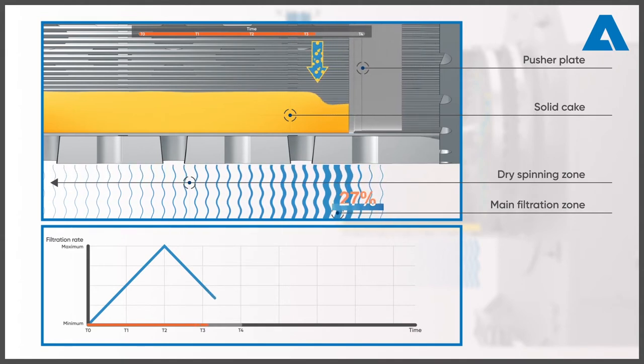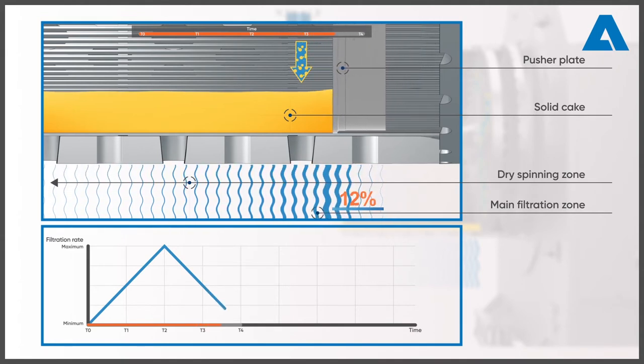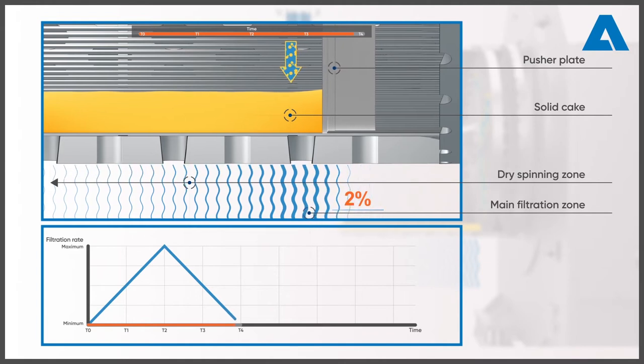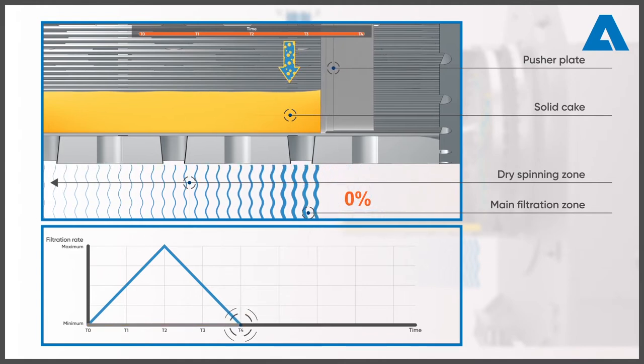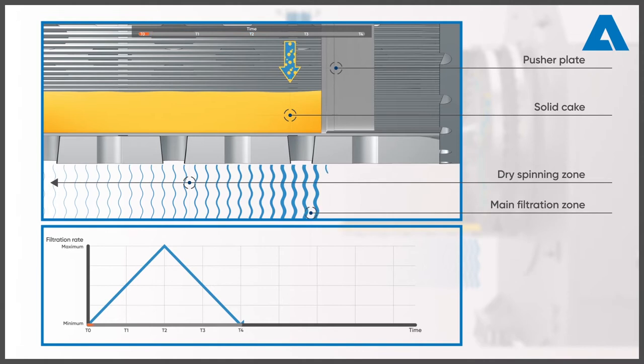This solid cake is pushed together by the pusher plate and compressed more and more as this happens. The filtration rate is reduced continuously as a result. As soon as the pusher plate reaches its far left position, the whole cycle starts over again.